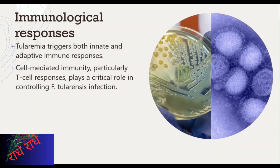Immune responses to F. tularensis infection are complex. Innate and adaptive immunity both play an important role in modulating the outcome of the infection. Innate immune responses, such as the production of inflammatory cytokines and nitric oxide, are initiated immediately upon infection and work to limit bacterial replication and spread. The adaptive immune system, composed of B and T cells, also plays an important role in controlling infection. In particular, CD4+ T cells are specifically required to protect against tularemia, and in vitro studies show that these cells produce pro-inflammatory cytokines that are important for controlling bacterial replication and spread.